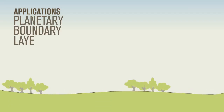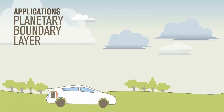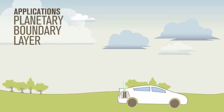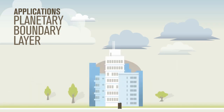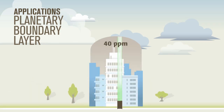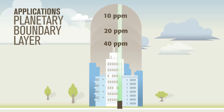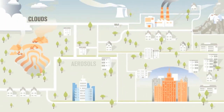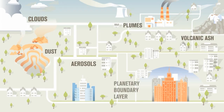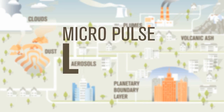Since aerosols accumulate in the planetary boundary layer — the layer of the atmosphere closest to the Earth's surface — MPL is also ideal for monitoring its daily rise and fall. The planetary boundary layer is the mixing bowl for greenhouse gases, and the size of this bowl is essential to calculate emission inventories for climate change and air quality. Using precise measurements, MPL can improve our understanding of pollution level and air quality for environmental monitoring and enforcement.